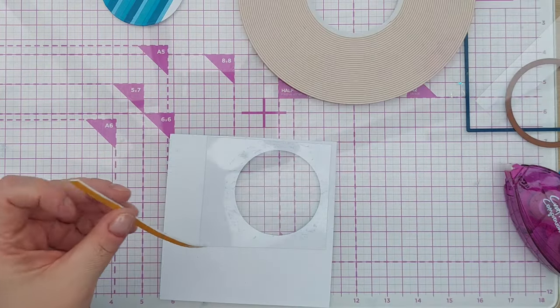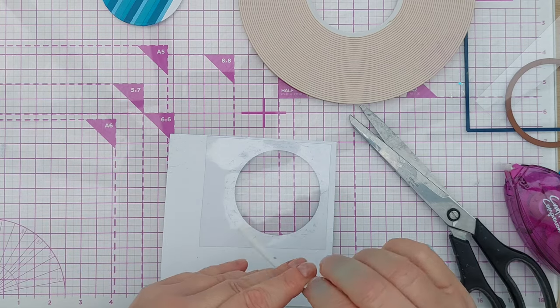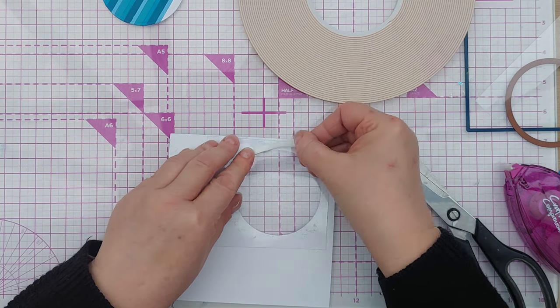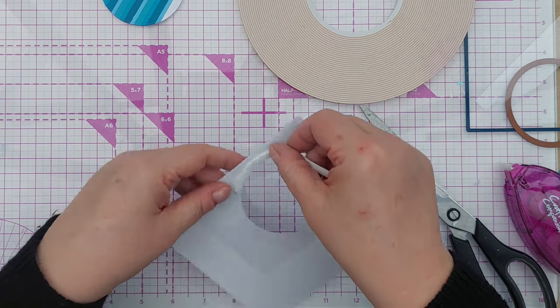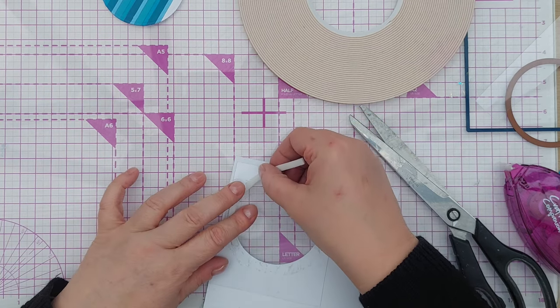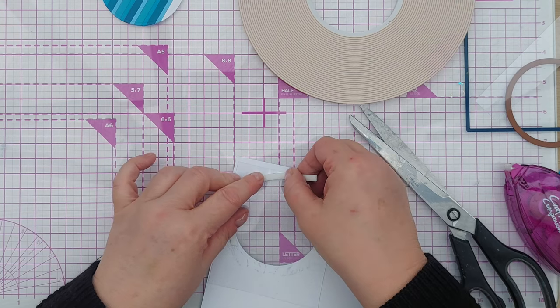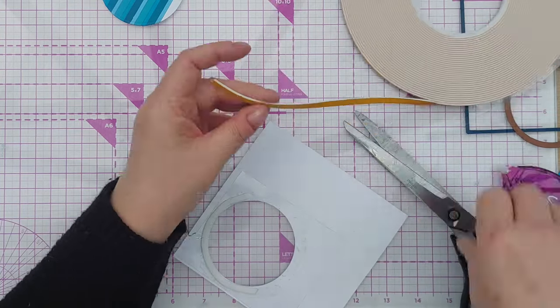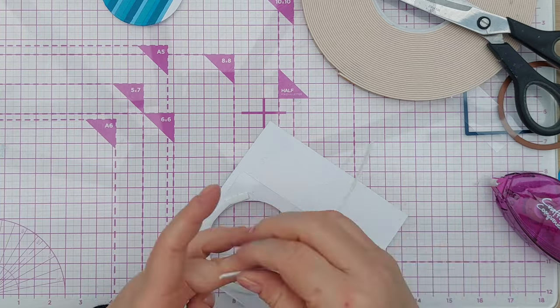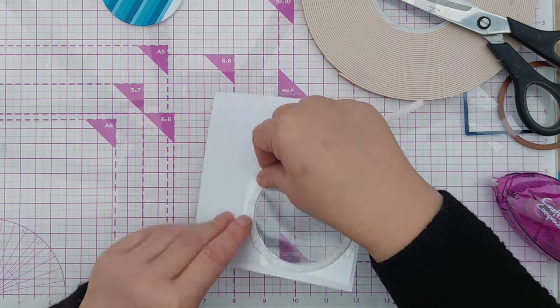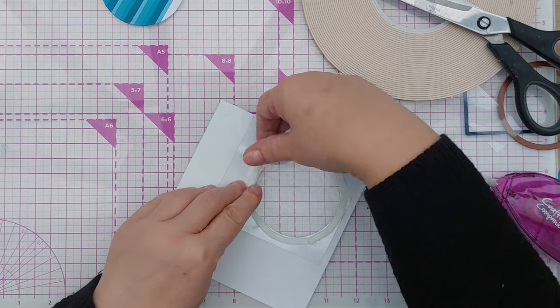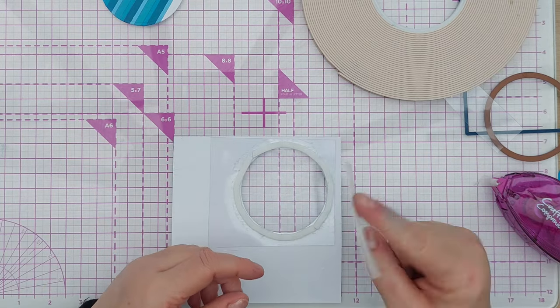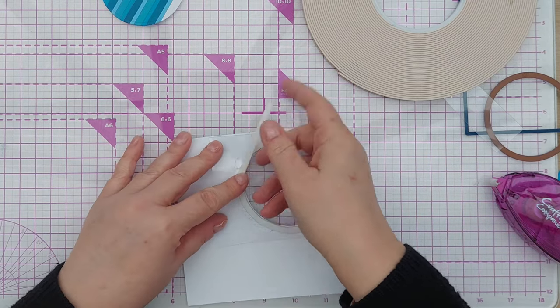I'm going to go around it with foam tape. Because this foam tape is going to have to curve, I am taking the release paper off because it makes it so much easier to curve around. Because this is quite a shallow foam, I'm going to do a double layer.